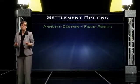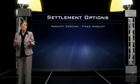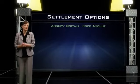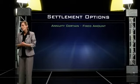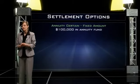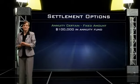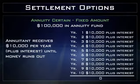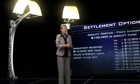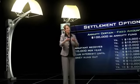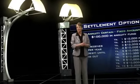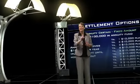An annuity certain could also be a fixed amount annuity, meaning the beneficiary knows the amount of money they want to receive every year. Using the example of a $100,000 death benefit, if the beneficiary needs to receive $10,000 per year, the insurance company will start making payments of $10,000 per year until that money runs out. Once again, part of every payment is going to be the death benefit, which is tax-free, and part of every payment is going to be interest, which is always taxable.